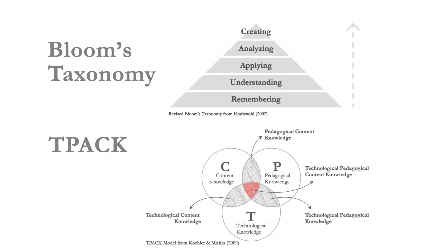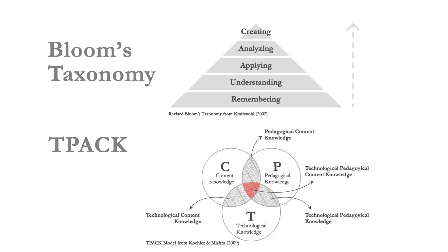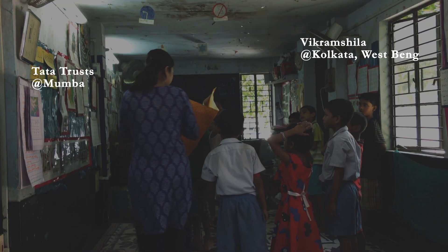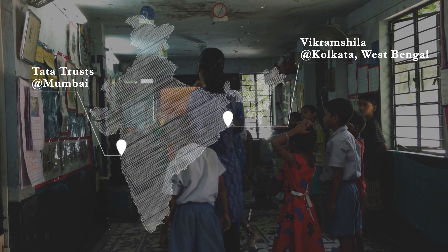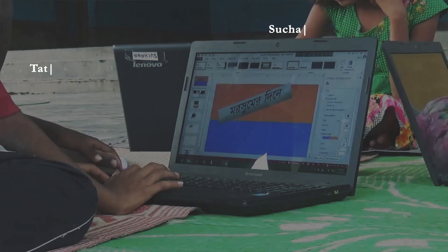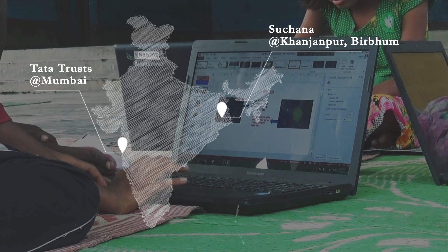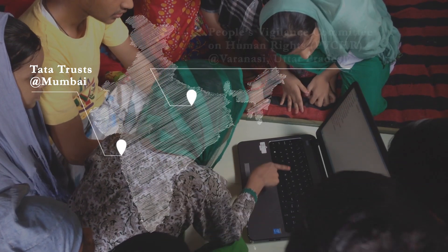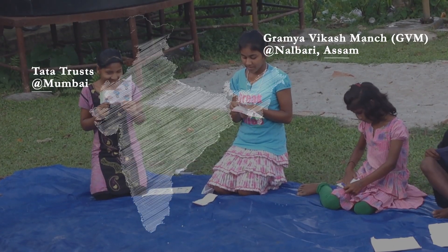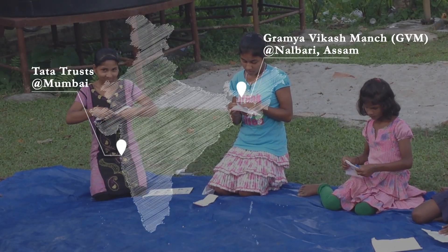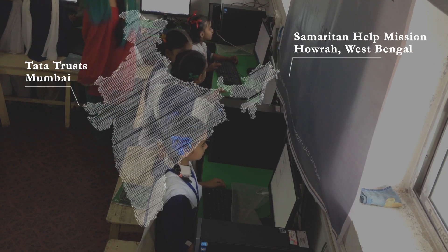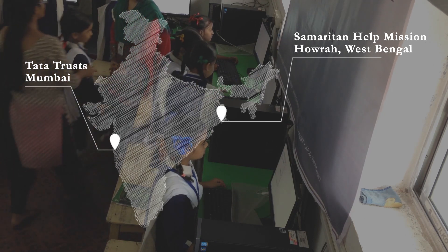So Bloom's Taxonomy and TPCK are very common models that we use in our training. The whole design of IT flows in to take current education partners who are good with pedagogy or have very strong educational institutions. Most of the partners are not technology partners, and the trust offered them this approach and trained them so they could layer the IT program within their existing work.